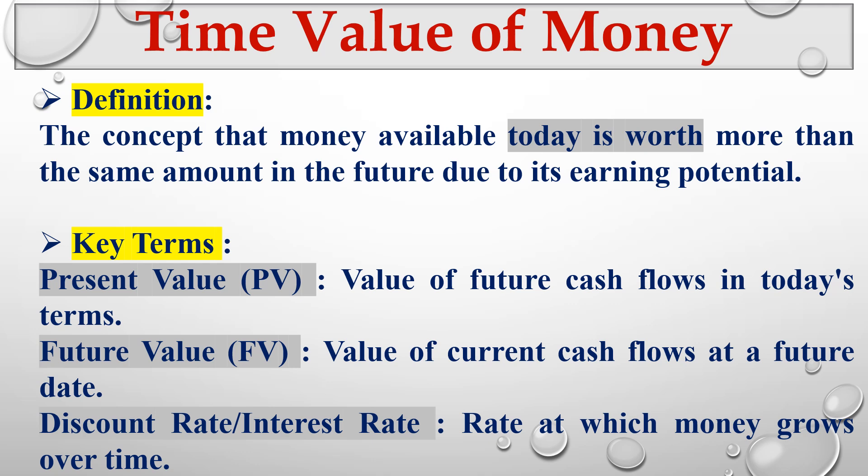The first concept is the time value of money. Money available today is worth more than the same amount in the future due to its earning potential. Money is always worth more today than later, because over time money loses its value. It's always better to have a thousand dollars today than the same amount after three years.